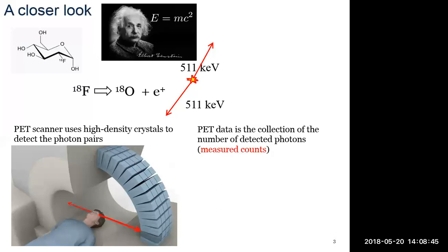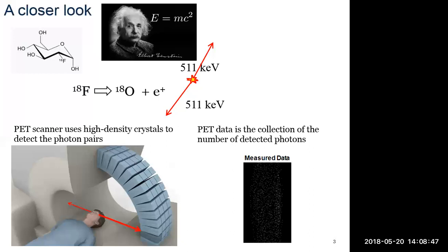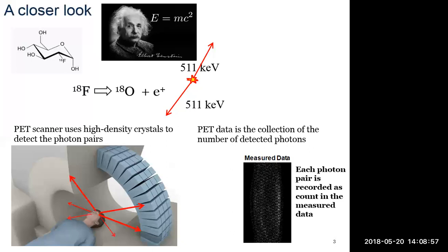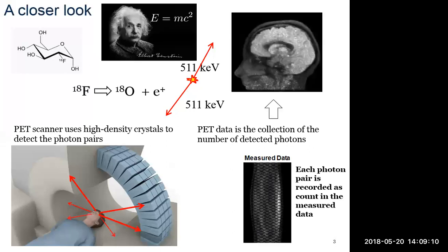That's just the case of one event, but obviously during the course of the PET scan we get many back-to-back photon pairs over time being emitted from the subject inside the PET scanner. The goal is that once we've recorded sufficient counts, we would then reconstruct the image representing the radioactive tracer's distribution — for example in the brain, which is the focus in this talk.